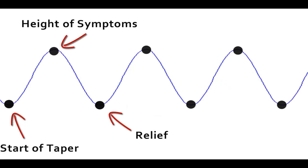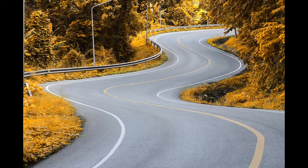Once someone surmounts their first taper, whatever pattern of symptoms they had, and the timing and onset of those symptoms, and then relief, will be similar to what they can expect on each subsequent taper. This withdrawal pattern is consistent for all medications, with the special exception being antipsychotics, which will be explained in detail later.